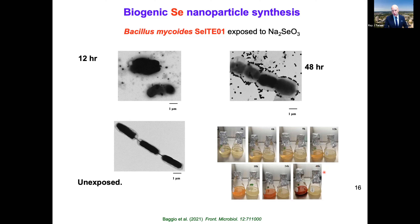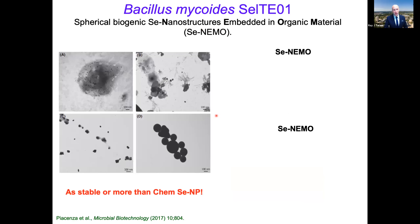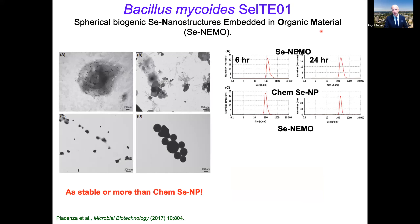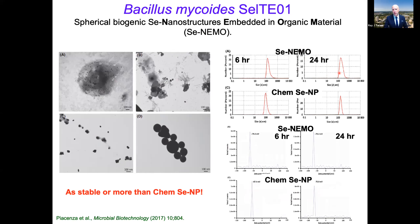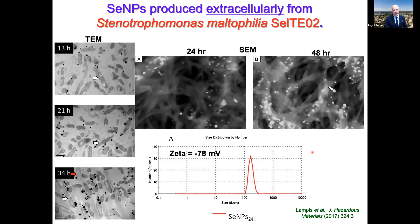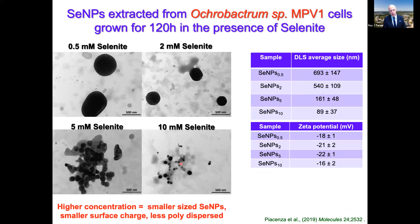One bacterium we were using for organic bioremediation in Alberta oil sands also turned out to be very highly metal resistant. Here's Bacillus mycoides with selenite — you can see the cultures grown unchallenged and challenged, and after 48 hours you have a very red-dense culture. You can see really nice, uniform selenium nanoparticles around the bacteria. When we extract them, we call these selenium nanostructures embedded in organic material — there's a bit of a fog around them, but we have good polydispersity and good zeta potentials, roughly equal to chemically synthesized nanoparticles.